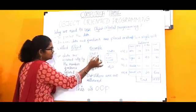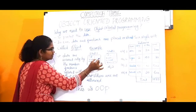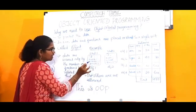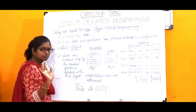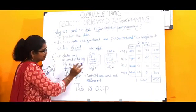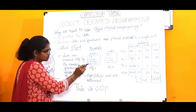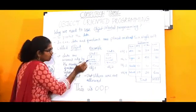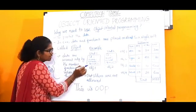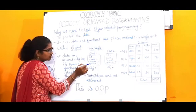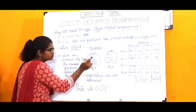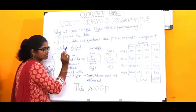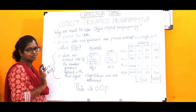For example, we have student objects: student one and student two. Student one is object one with details — id, name, course. Object two is student two with details — id, name, course. Only the function inside that object can access its data.